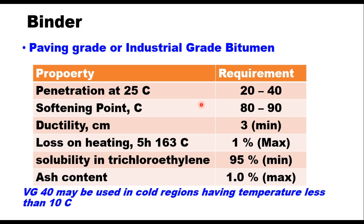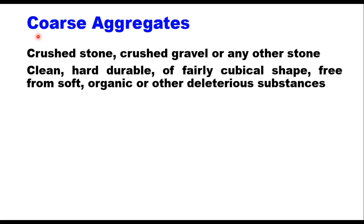These specifications are slightly different from what is given in MORTH 2013. These specifications are from IRC 107 2013. In MORTH specification, penetration value is 15 plus minus 5. And the softening point is also lower, 65 plus minus 10 degrees centigrade.